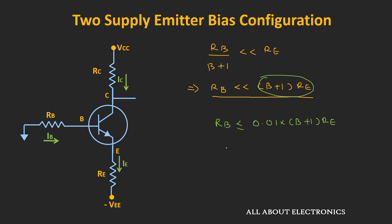So for example, if the value of β is equal to 100 and the emitter resistance is equal to 1kΩ, in that case the value of base resistance Rb should be less than or equal to 1kΩ. And this will get clearer once we take a few examples based on this configuration as well as the previous biasing configuration, which will be covered on our second channel.